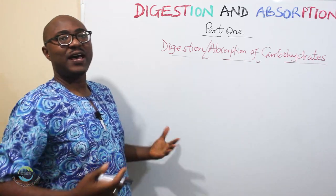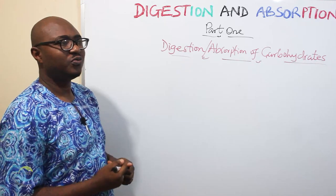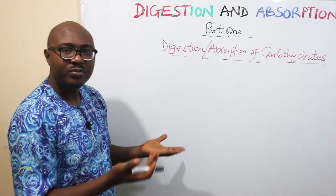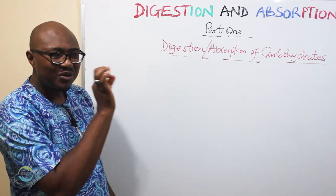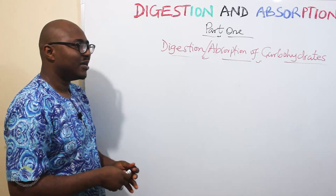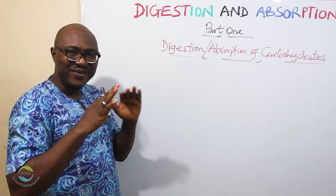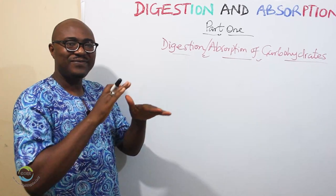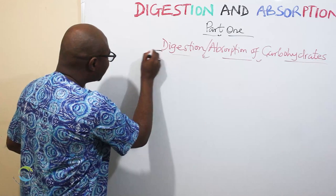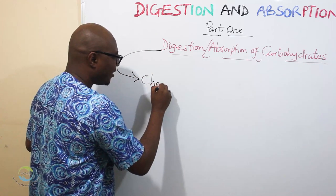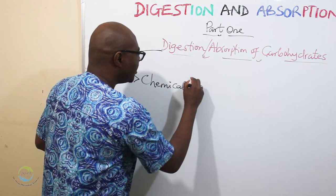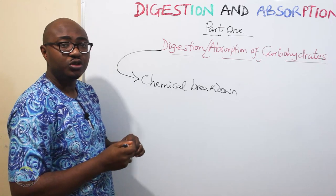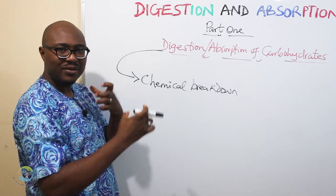Ask yourself: if we ask you to define digestion, how would you define it? Would it be the breakdown of food substances into absorbable molecules? There's something very important — chewing is also the breakdown of food substances into smaller particles, but chewing is a physical breakdown. Digestion, in essence, is a chemical breakdown. Even if you don't chew the food, there will still be some chemical breakdown.